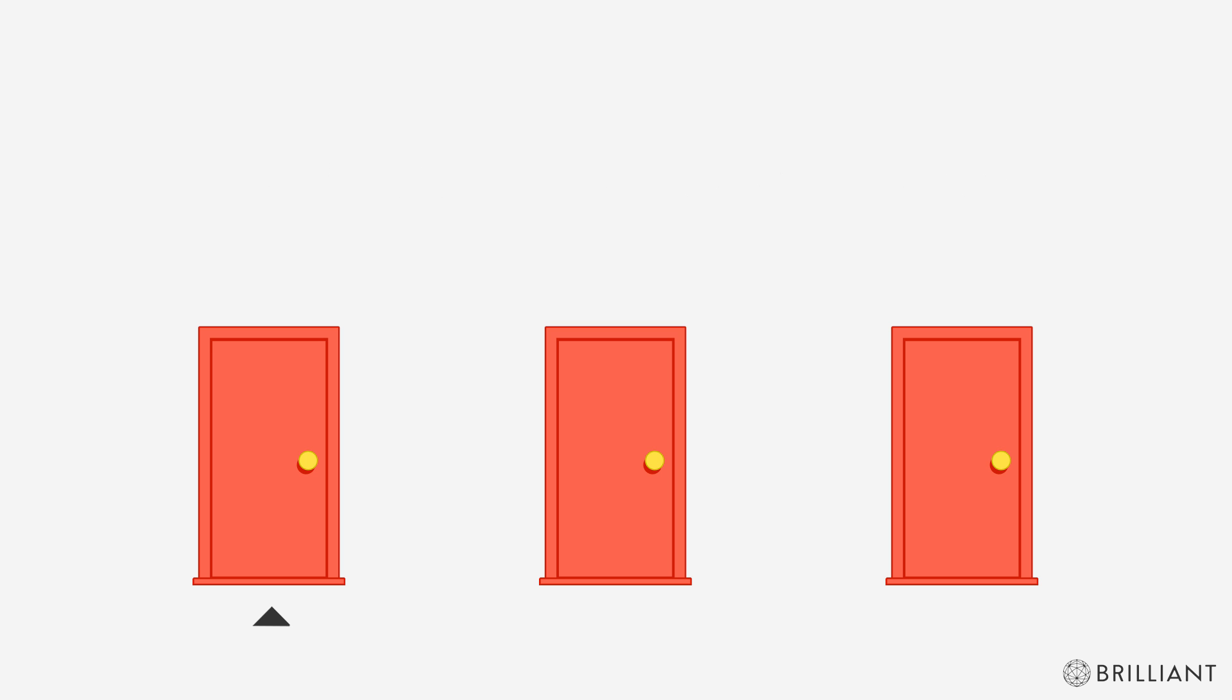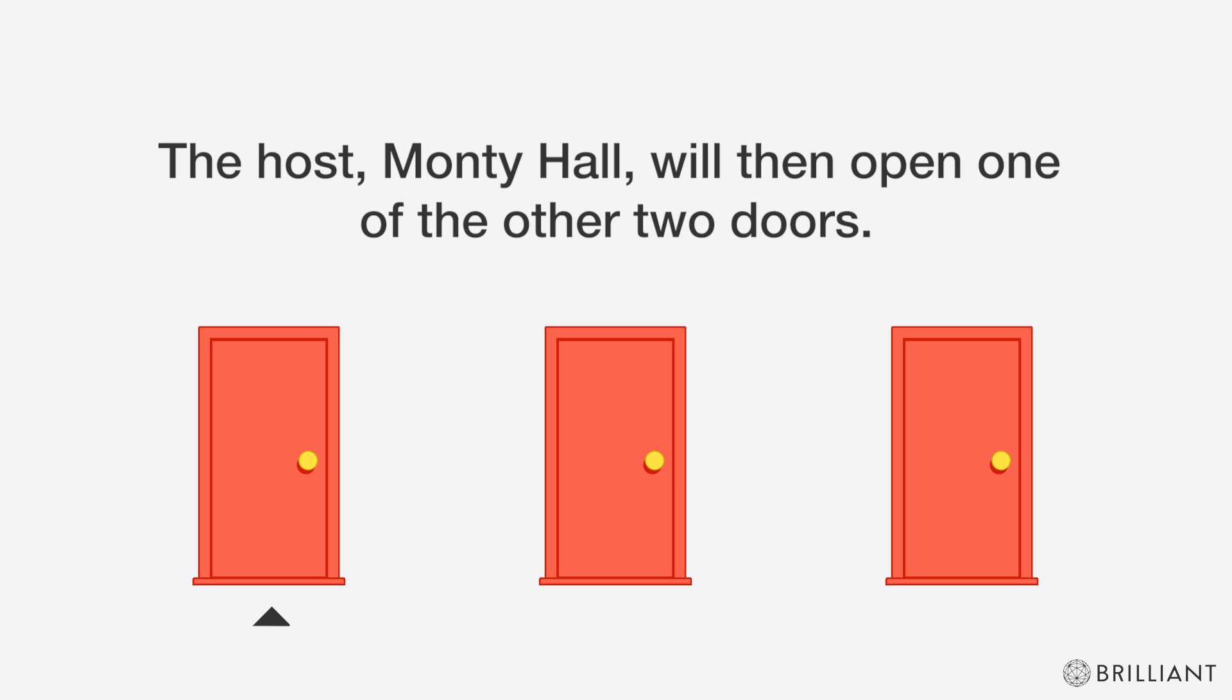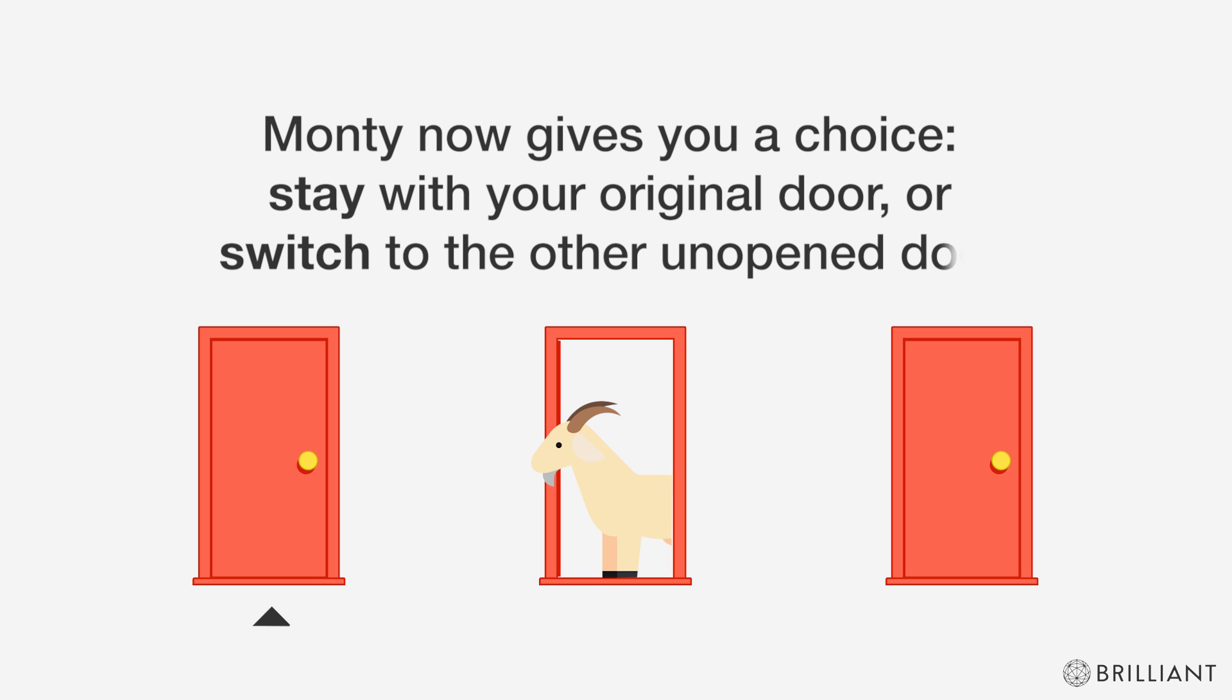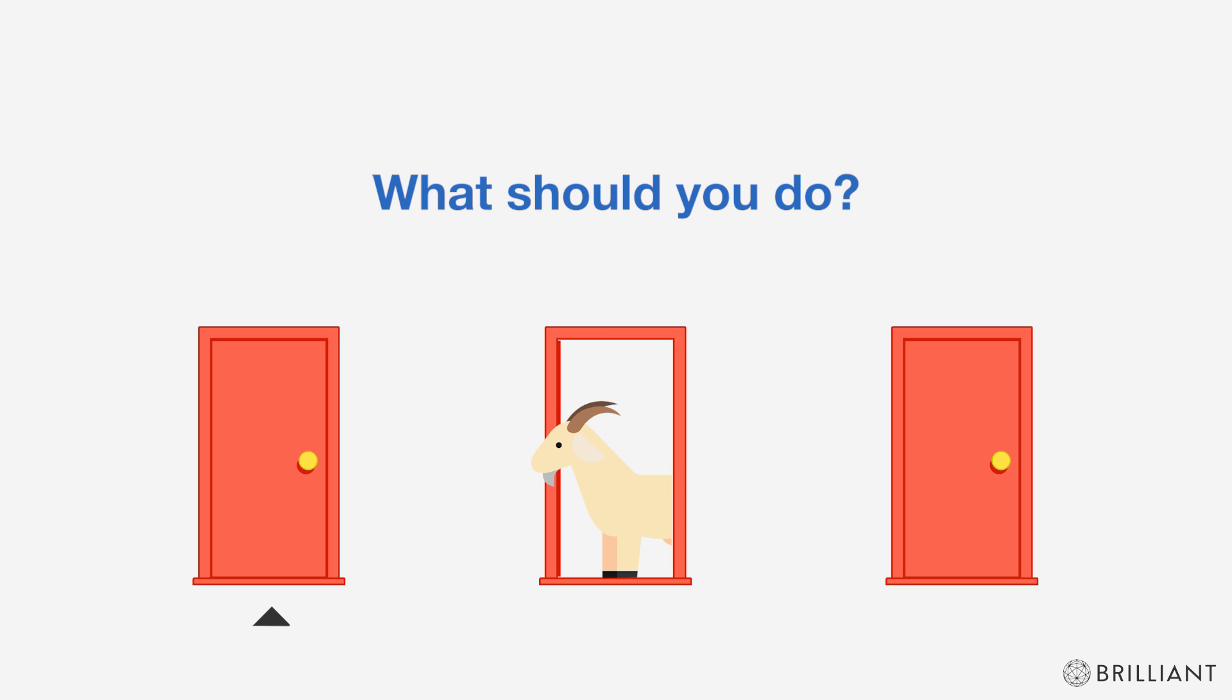The host, Monty Hall, will then open one of the other two doors. He knows what's behind each door and always chooses a door with a goat. Monty now gives you a choice: stay with your original door or switch to the other unopened door. What should you do?